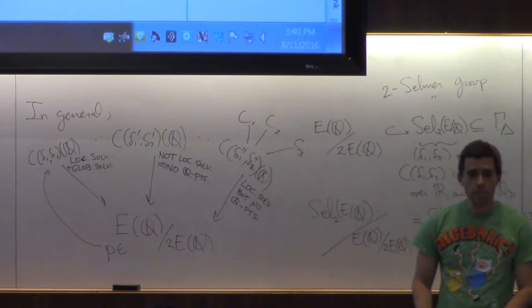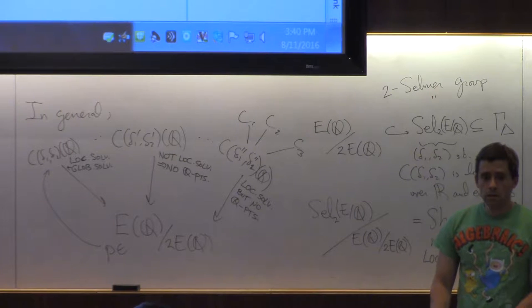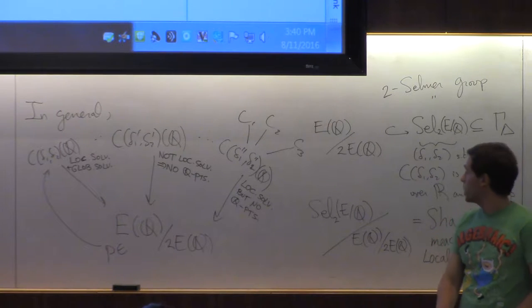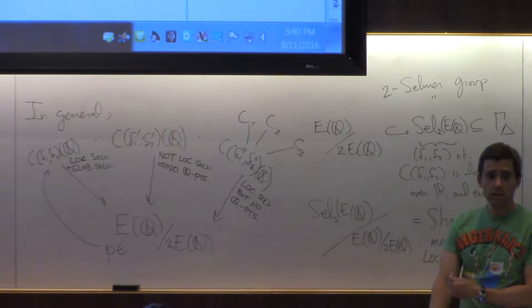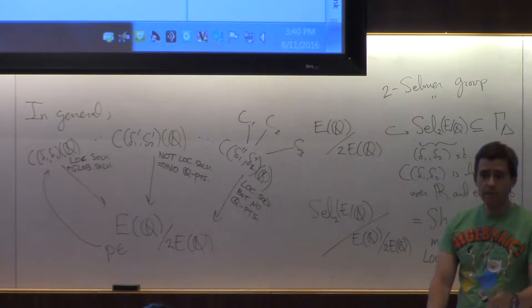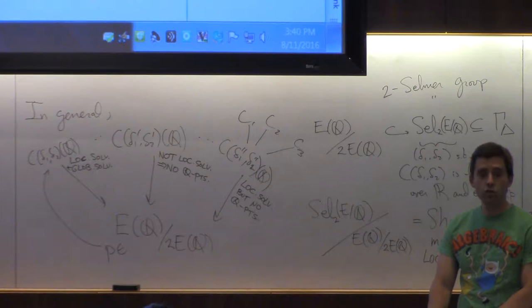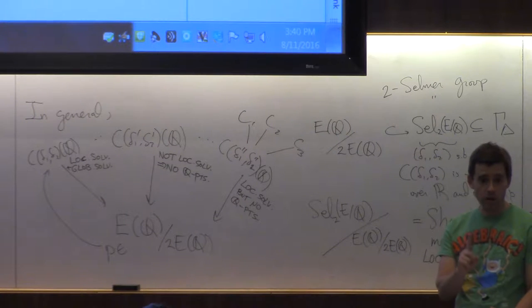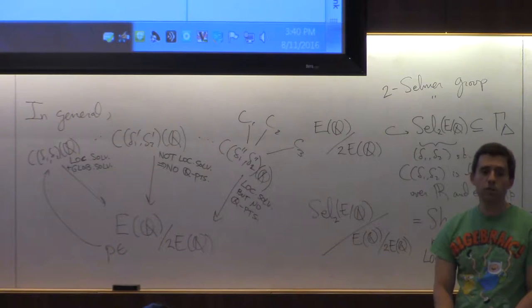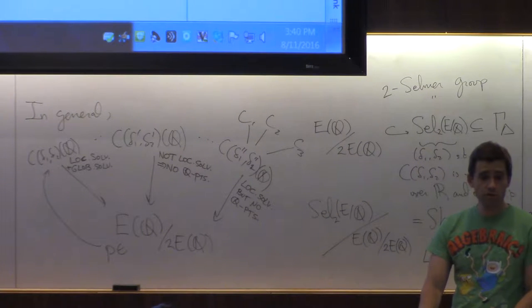So this is the easiest descent that I presented, because you have the four two torsion. There is another descent that is easy to implement, that is the two isogeny descent, which is the case when you have this one point being rational, that's also easy to implement. When you have no points of two torsion defined over Q, what you have to do is like, well, I want my points to be defined over the base field,